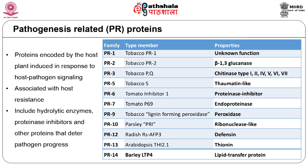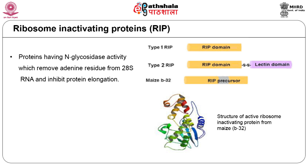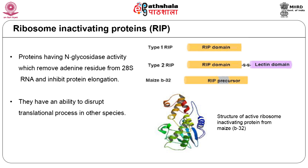Pathogenesis-related proteins were first observed as new protein components induced by tobacco mosaic virus in hypersensitively reacting tobacco. PR1 is the most abundant of the PR proteins, induced 10,000-fold in infected tissues and constituting 1 to 2 percent of the total leaf protein. Ribosome inactivating proteins (RIPs) from plants are proteins having N-glycosidase activity. These proteins remove an adenine residue from 28S RNA, which prevents binding of the 60S ribosomal subunit to elongation factor 2 and inhibits protein elongation. Plant ribosome inactivating proteins inactivate foreign ribosomes of distantly related species like fungi and disrupt translation, thus inhibiting fungal growth.